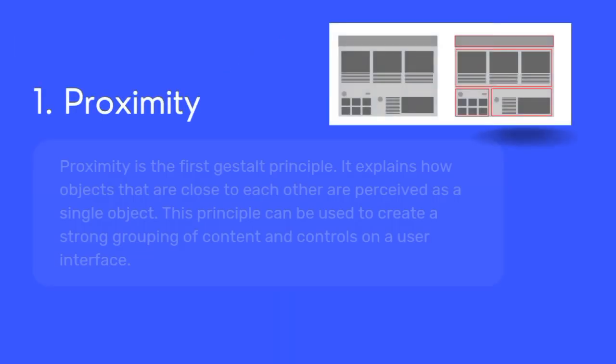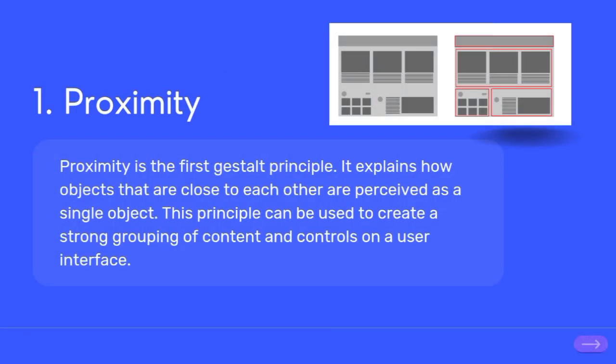Proximity is the first Gestalt principle. It explains how objects that are close to each other are perceived as a single object. This principle can be used to create a strong grouping of content and controls on a user interface.